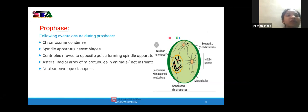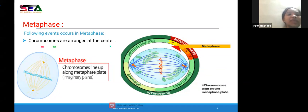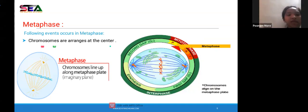After anaphase comes telophase — the last stage. As chromosomes move to opposite poles, centrioles start to develop. Nuclear membrane and nucleolus start to reform around each set of chromosomes. Chromatin threads form from the chromosomes, which get decondensed — thick chromosomes convert to thin chromosomes. Spindle apparatus disassembles and contracts. Nuclear envelopes reform by taking each set of sister chromatids. Suppose 16 chromosomes: 8 move to one pole, 8 to the opposite.